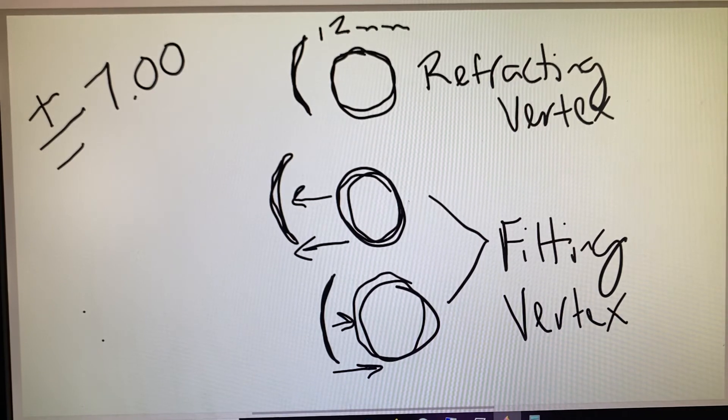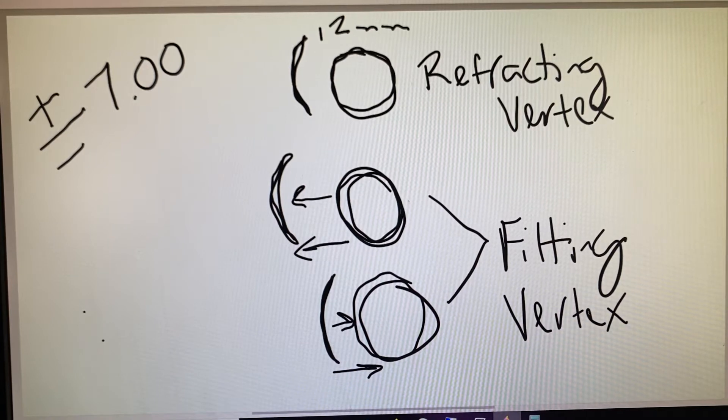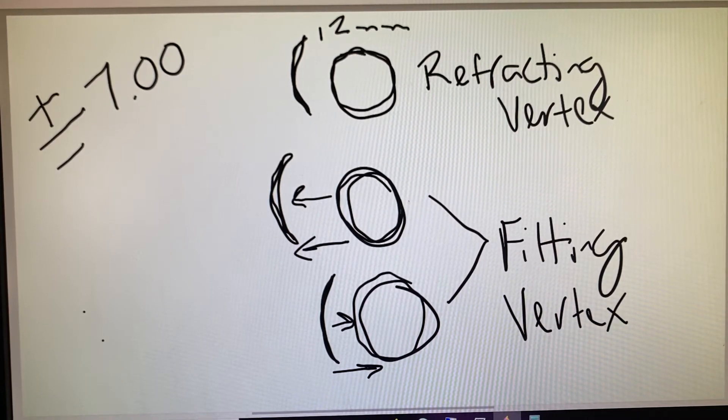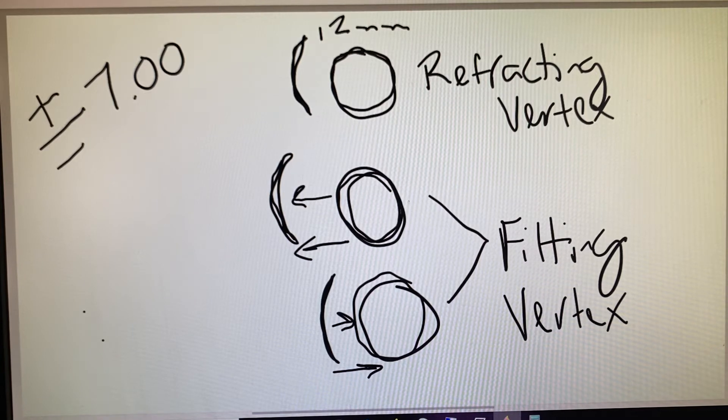a couple millimeters of difference in refracting versus fitting vertex really would not affect our patient a whole lot. However, if they were a minus 12 or a plus 10, we would definitely start to see some differences in the prescription based on some movement in vertex.